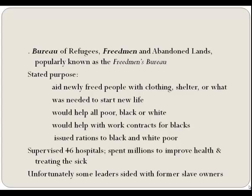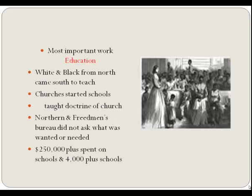The Freedmen's Bureau was an organization to aid newly freed people with clothing and shelter—whatever they needed to get started—and was also designed to help the poor white. One of the main concerns was supervision of contracts for work between the former slave owner and the newly freed man. In four short years, they issued 21 million rations—5 million going to whites—supervised 46 hospitals, and spent more than 2 million dollars to improve the health of former slaves. But no law is good unless it's enforced, and no organization can do well with inexperienced and poorly trained leaders.